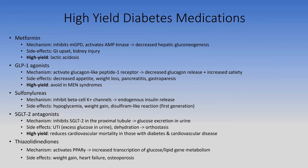SGLT2 antagonists block the SGLT2 co-transporter in the proximal tubule, preventing glucose reabsorption with sodium, so glucose is excreted in the urine. Side effects include UTIs (bacteria use the glucose), dehydration leading to orthostasis, and candidiasis. A recent high-yield finding: SGLT2 inhibitors reduce cardiovascular mortality in those with diabetes and cardiovascular disease, and can now be prescribed in cardiovascular disease even without diabetes.